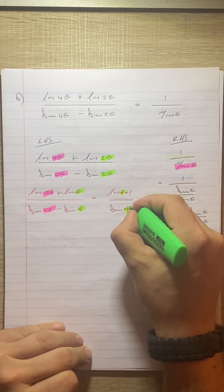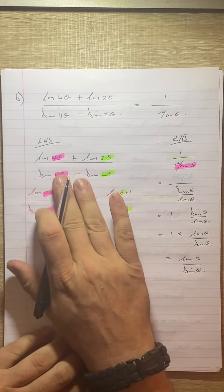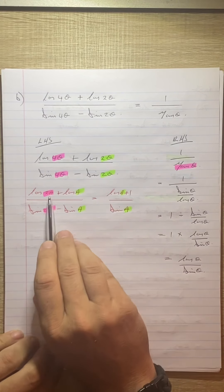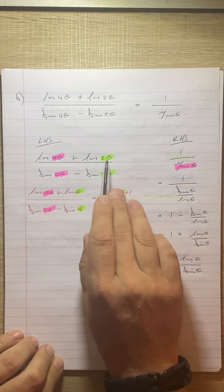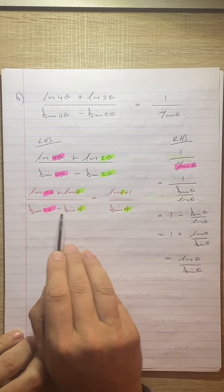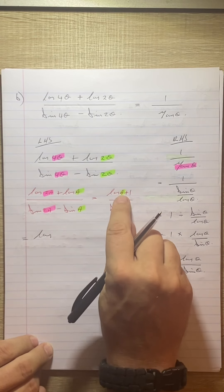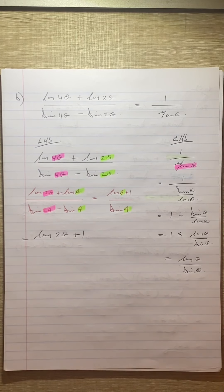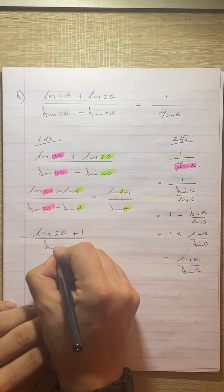This one is double that one, this one is double that one — it's always the smaller angle that goes in place of A. Our smaller angle is 2θ. The structure matches perfectly: cos plus cos, sin minus sin. So applying the result from A, the left-hand side becomes cos 2θ plus 1 over sin 2θ. Now I can use our double angle formulas again.